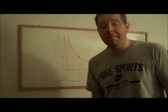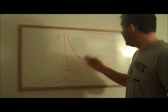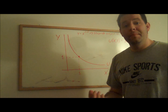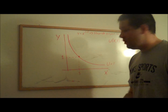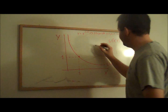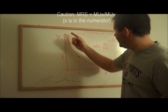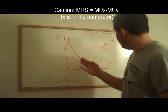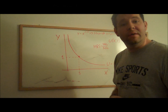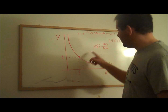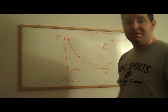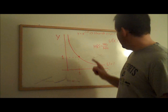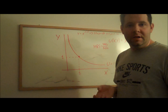Remember from the last video that we can compute the marginal rate of substitution by taking the ratio of marginal utilities. The marginal rate of substitution is the negative of the slope of the indifference curve. Using this formula, we can figure out the slope at any point in the plane, not just at utility equals 1.